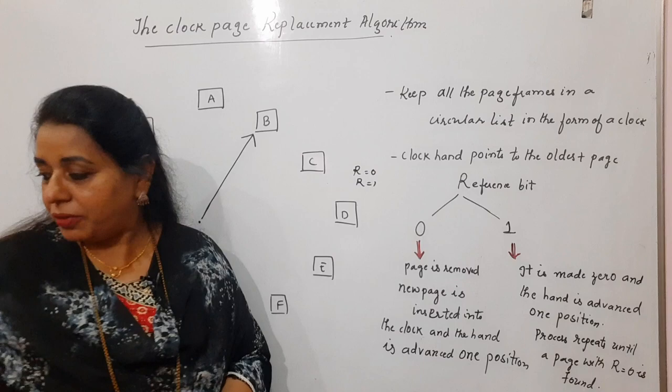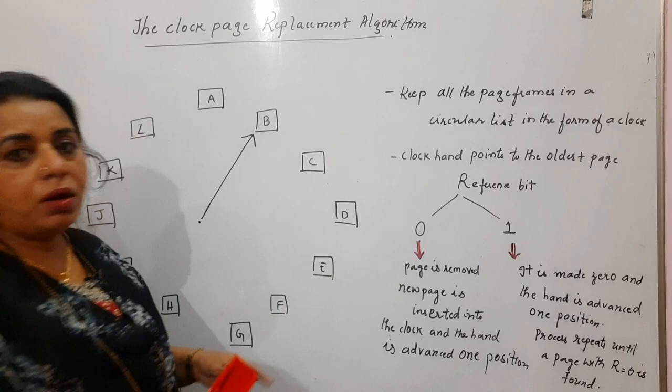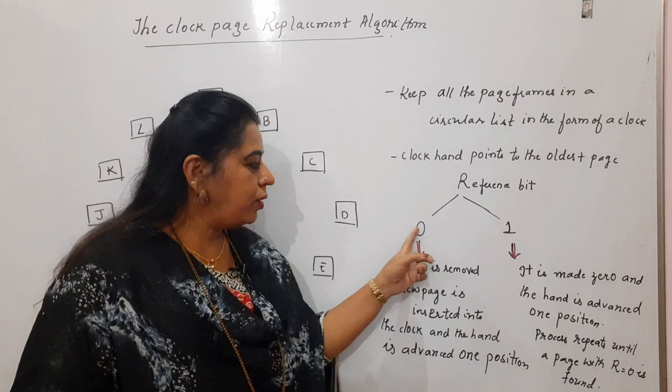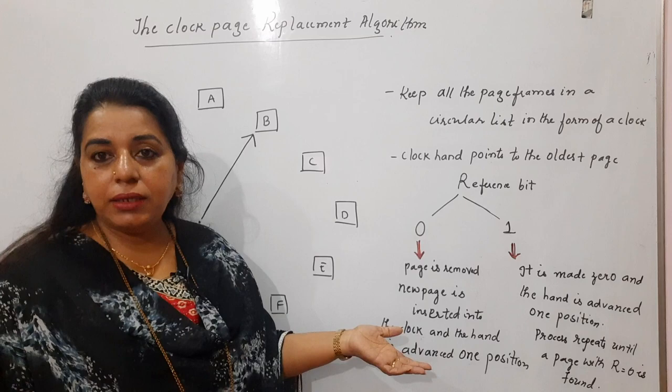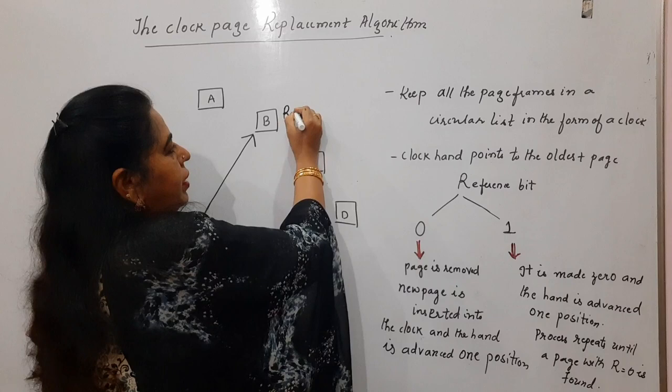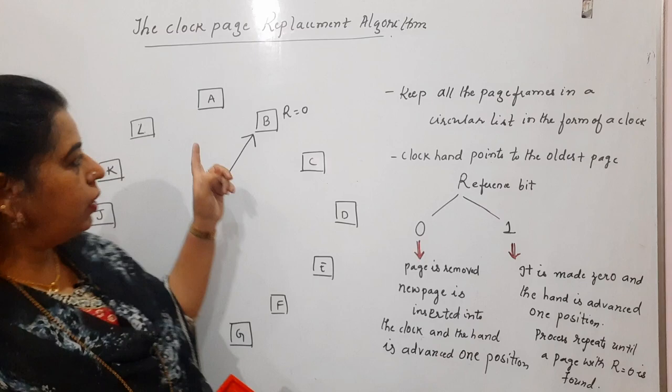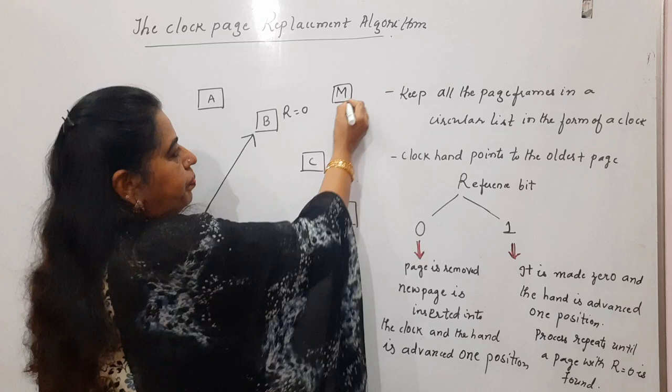Whenever a page fault occurs, we need to determine which page to select for replacement. Every page will have the R bit either set or reset — either zero or one. If the value of the reference bit is zero, the page is removed. It works similarly to the second chance page replacement algorithm. If a page's reference bit equals zero, that page is selected for replacement.